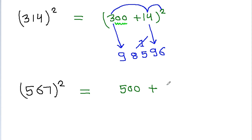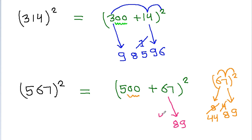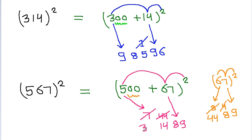And 3 squared is 9. And if we have to square 567, then it is equal to 500 plus 67, squared. And 67 squared: 7 squared is 49, so 9 and 4 carried. And 6 times 7 is 42, times 2 is 84, plus 4 is 88. So 8 and 8, and 6 squared is 36, plus 8 is 44. So we write 4, and 5 times 67 times 2 is 670, plus 44 is 714. So 14 here and 7 will get carried, and 5 squared is 25, plus 7 is 32. So that is the square of 567.